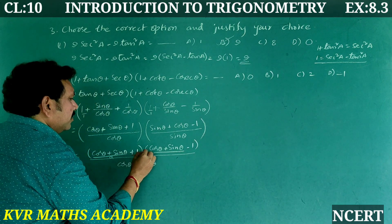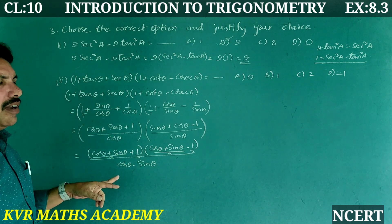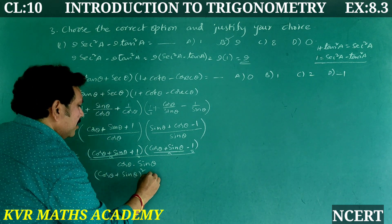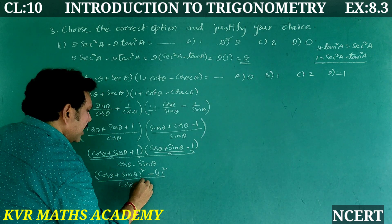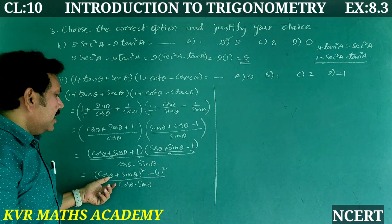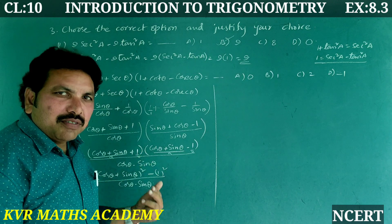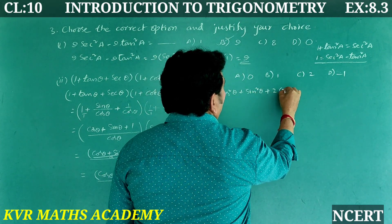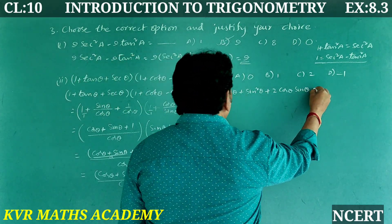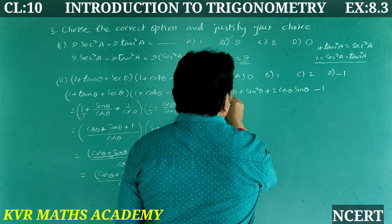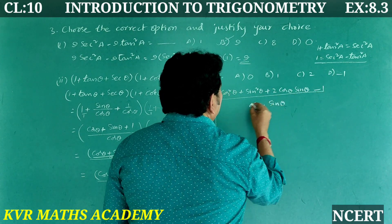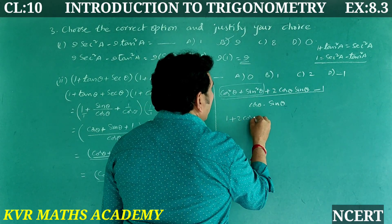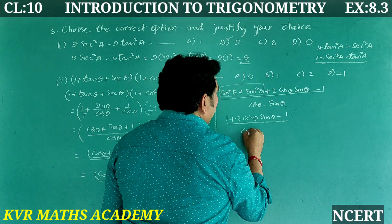Let a = cos θ + sin θ and b = 1, so numerator is (a + b)(a − b) = a² − b². That gives (cos θ + sin θ)² − 1² all over cos θ · sin θ. Expanding: cos²θ + sin²θ + 2cosθ sinθ − 1 over cos θ · sin θ. Using the first trigonometric identity, cos²θ + sin²θ = 1, so numerator becomes 1 + 2cosθ sinθ − 1.